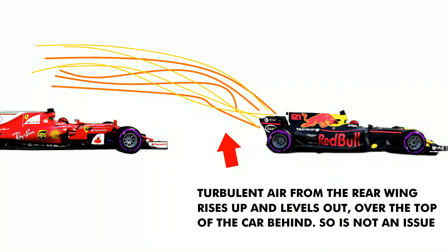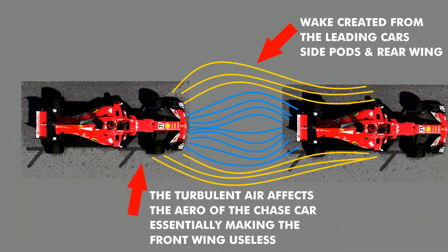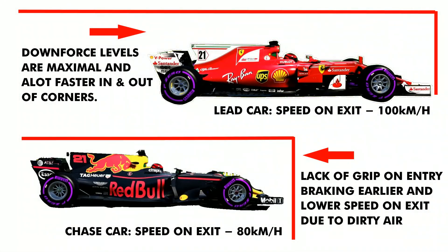The largest issue is the wake created by the front wings and barge boards. As it sends turbulent air out behind both sides, the following car drives into this wake and loses further downforce, reducing overall grip. Because the chase car has now lost a lot of downforce, there is less grip into the corners, resulting in the driver needing to brake earlier and take corners slower than usual. As a lot of overtaking is done on the straights, having more speed when exiting a corner is key to completing the overtake by the end of that straight.